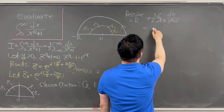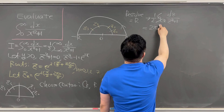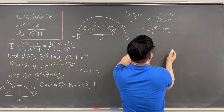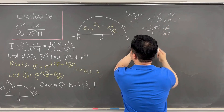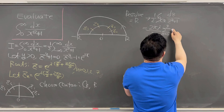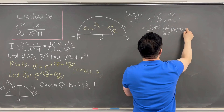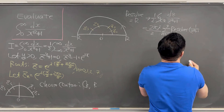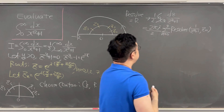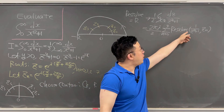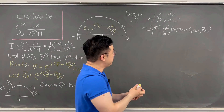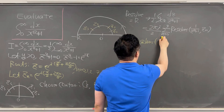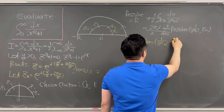This equals 2πi over 2, times the summation from n=0 to 3 of the residue of 1/(z⁸+1) at z_n. Let's compute the residue of 1/(z⁸+1) at z_n.